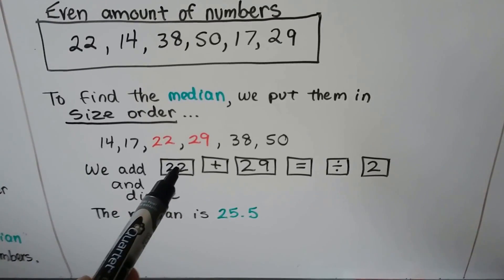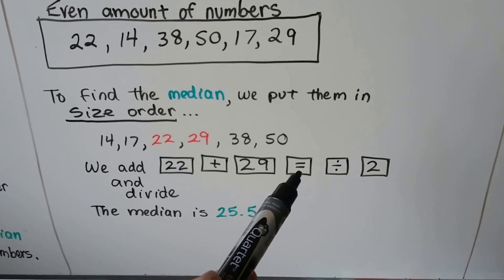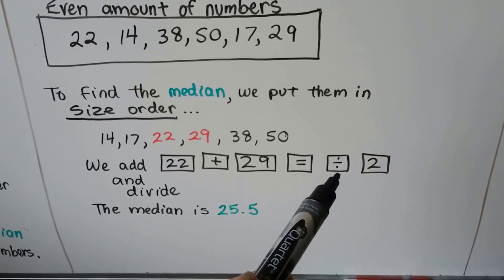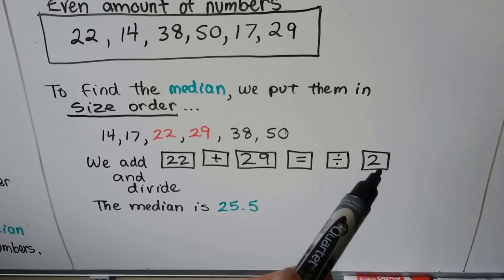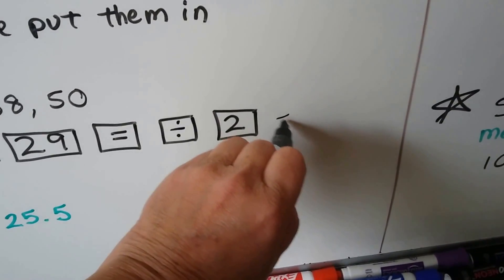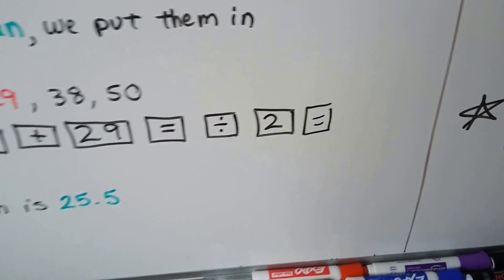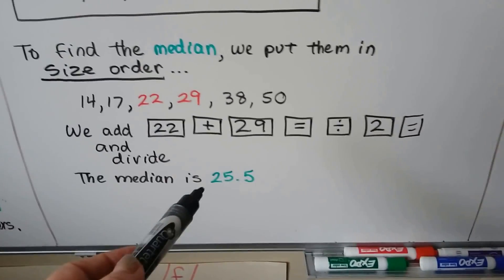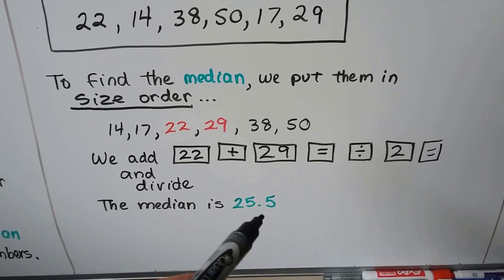We add 22 plus sign 29. We hit equal, then we hit division sign, and then 2, and then we would hit equal. There would be another equal back here. The median will come out as 25.5.